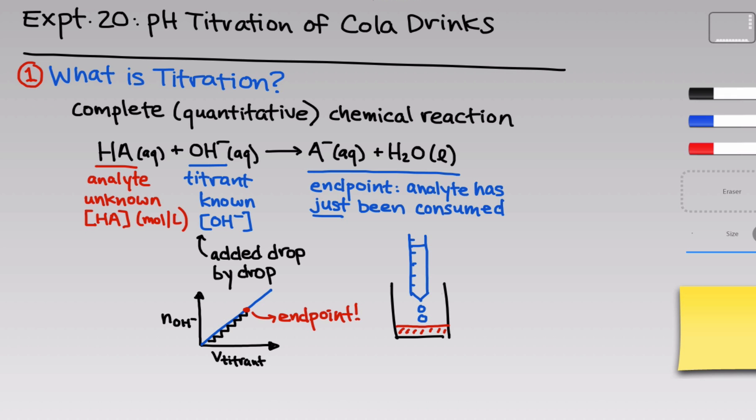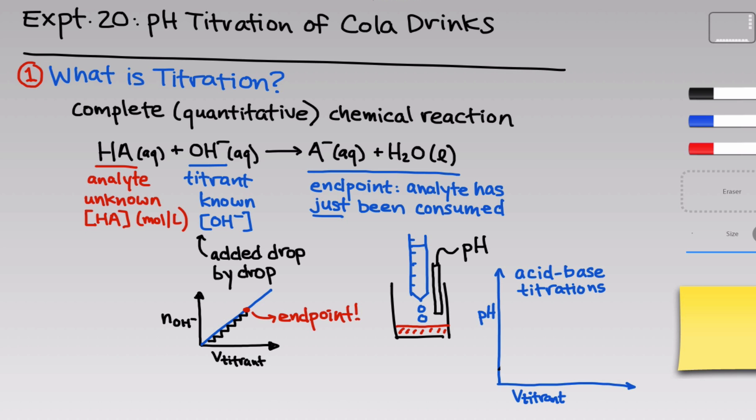When we reach the end point, we've added just enough moles of hydroxide to balance the moles of HA, so we can calculate the moles of HA from the moles of hydroxide added. In addition to calculating the HA concentration in a solution of cola, we're going to monitor the pH as we add titrant and plot the pH of the combined analyte and titrant solution as a function of the volume of titrant added — this is very common for acid-base titrations. When we do this, we get a curve like the one shown in black, and a special point shown in red is the end point of the titration.